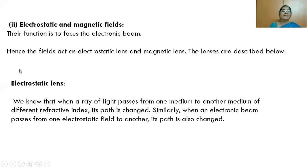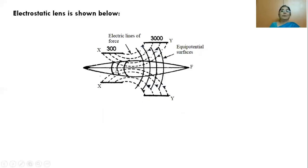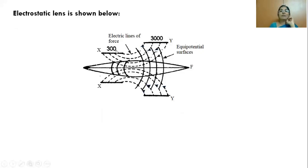Just as a ray of light changes its path when passing from one medium of refractive index to another, an electron beam changes its path when passing from one electric field to another. This technique is used to focus the electron beam. Two cylinders, XX and YY, are used — one given 300 volts and the other 3000 volts. Electric lines of force proceed from the higher potential region to the lower potential region.